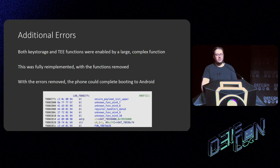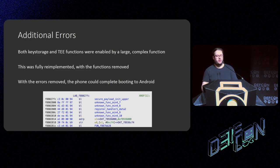Both of these particular functions were enabled by a very large and complex function that would take a long time to modify or bring back from scratch. However, I ended up doing that by fully implementing it — checking every if statement throughout the function for different hardware initializations and ignoring the code paths I didn't think it would hit. With these errors removed, the phone could then complete booting to Android.